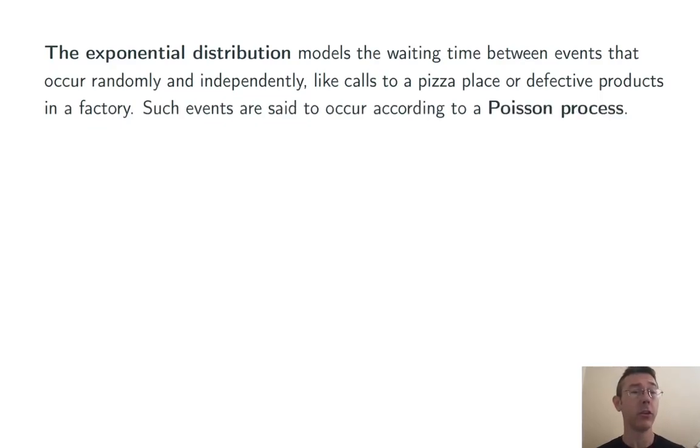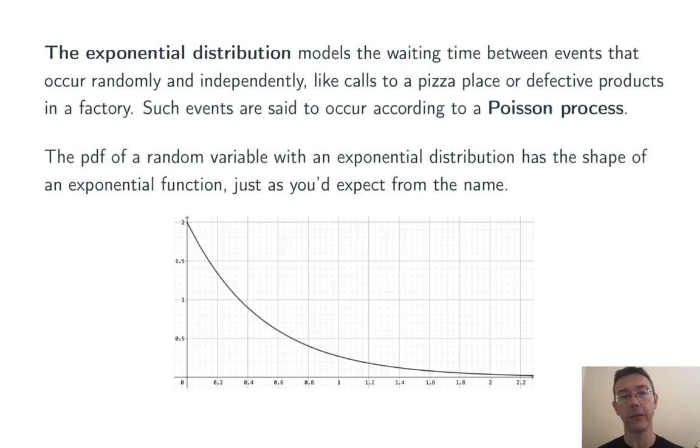In other words, events that occur according to an approximate Poisson process. The name exponential distribution comes from the fact that the PDF, the probability density function of such a random variable, has the shape of an exponential function like the one I have pictured here.